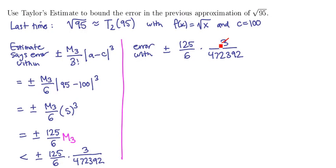And if we cancel, 3 goes up there twice. And I don't think there's any other cancellations. We're just going to get 125 over doubling the bottom. We'll get 944,784. And there's our estimate right there.